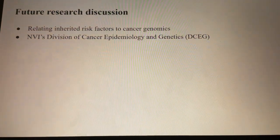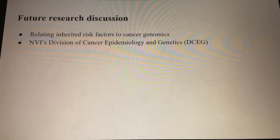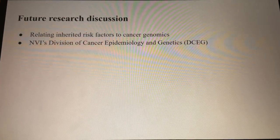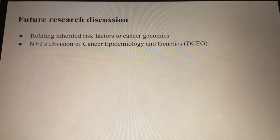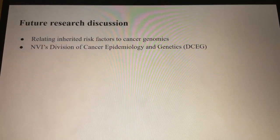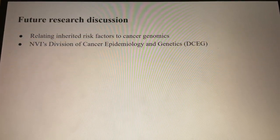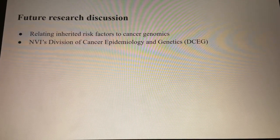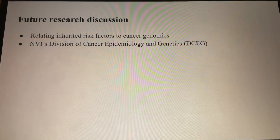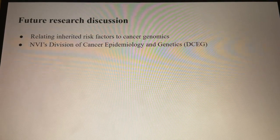One of the ongoing research directions is relating inherited risk factors to cancer genomics. Researchers in NCI's Division of Cancer Epidemiology and Genetics, DCEG, are actively engaged in discovering innovative molecular and genomic patterns within tumors that correlate with inherited genetic variations and environmental influences. This strategy aims to uncover previously unidentified risk factors and provide fresh perspectives into the biological processes underlying cancer development.